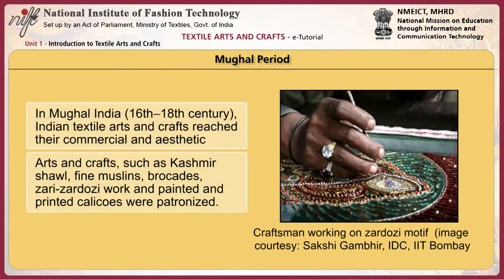In Mughal India, Indian textiles, arts and crafts reached their commercial and aesthetic zenith. During the 16th and 18th century, textiles, arts and crafts such as the Kashmiri shawl, fine muslins, brocades, zaris and painted and printed calicos — referred to as chintz in the English language — were patronized by the Mughal royals.